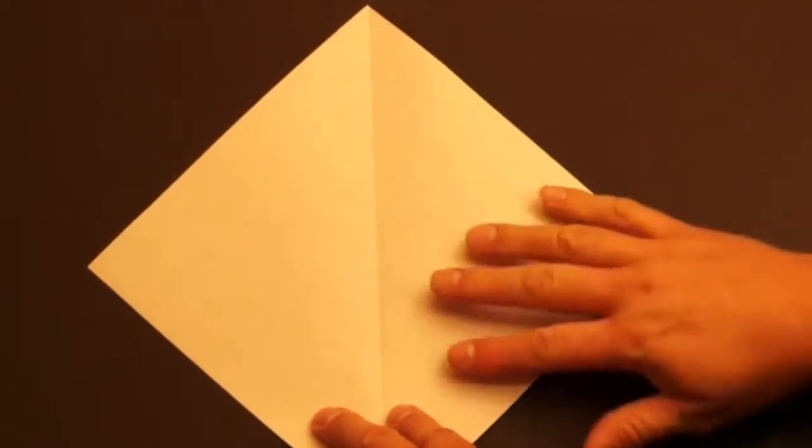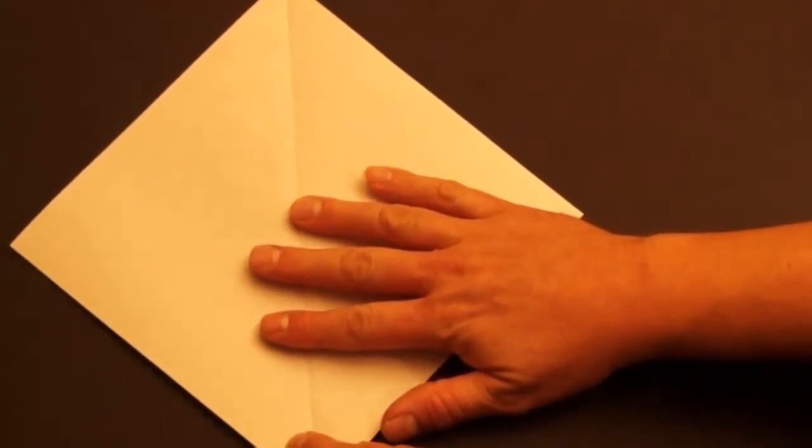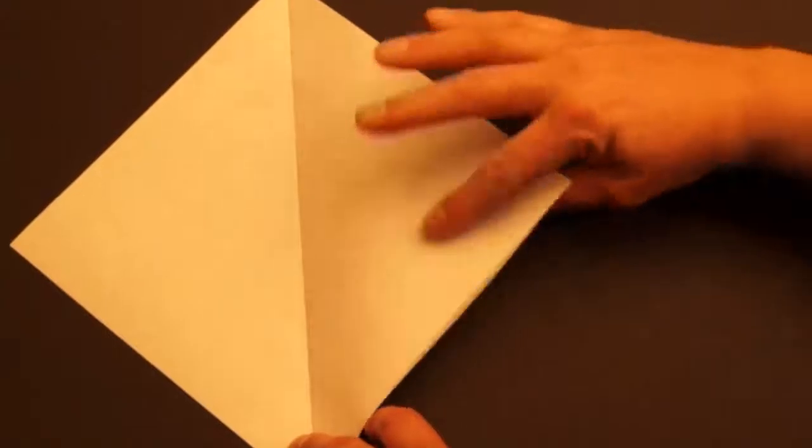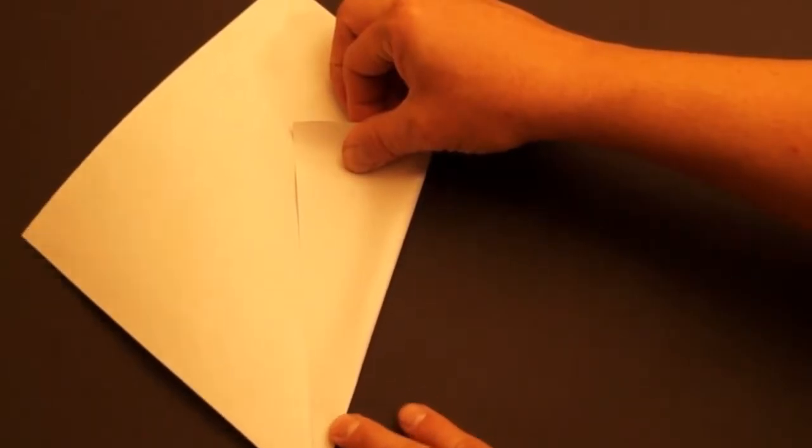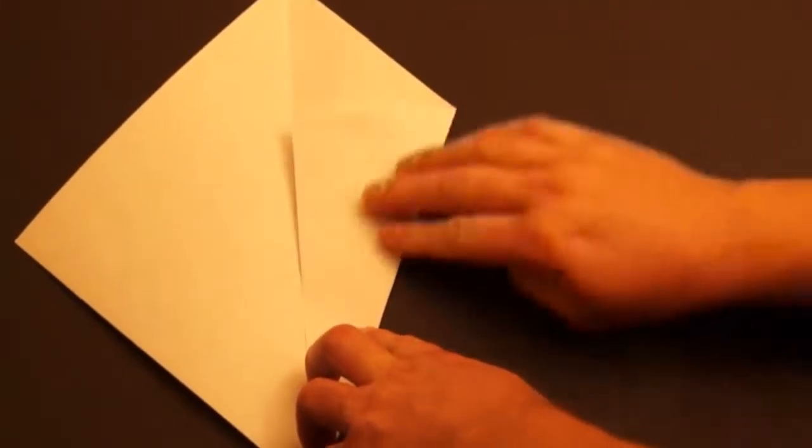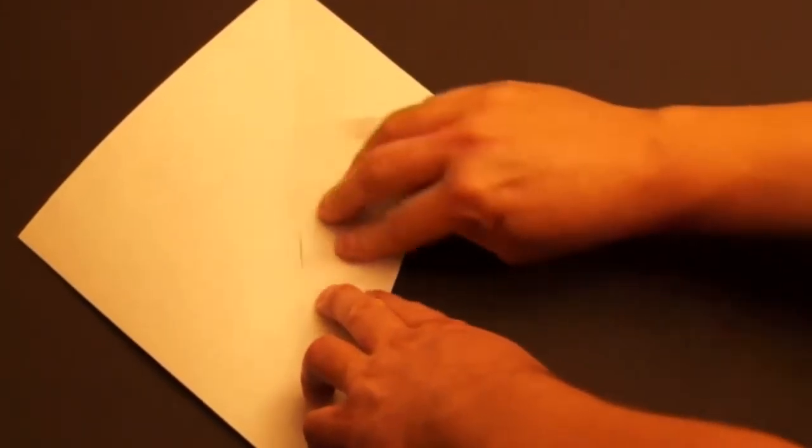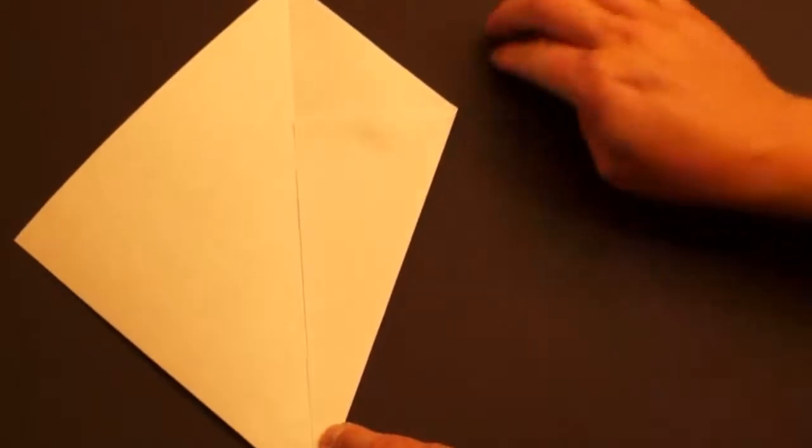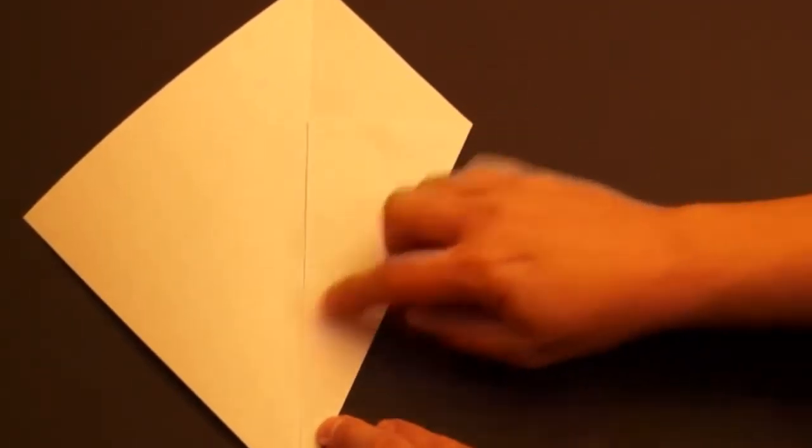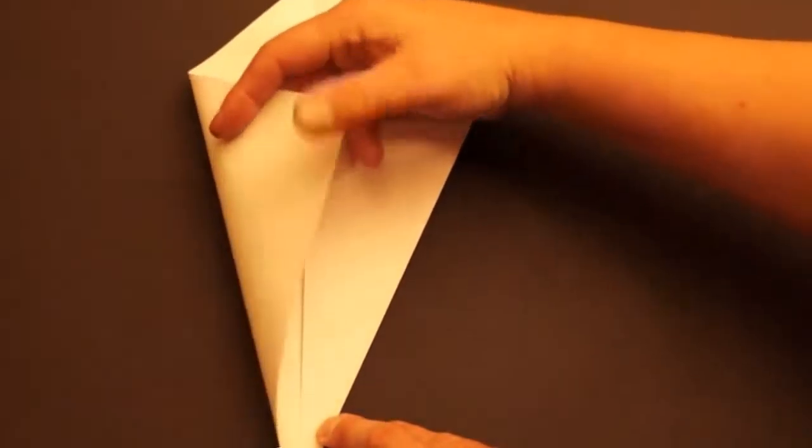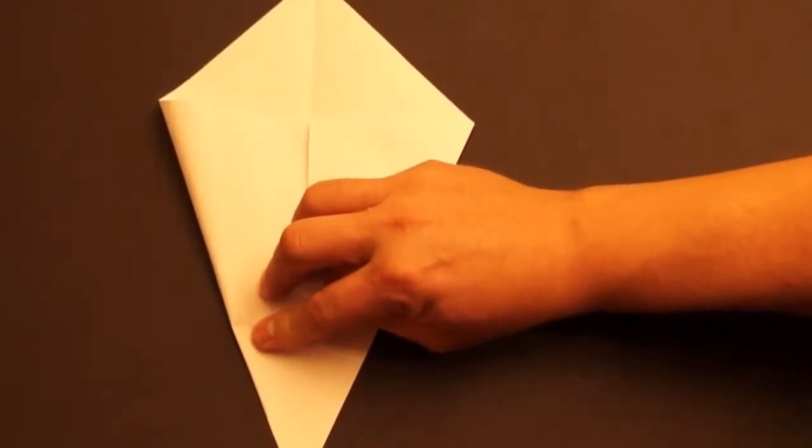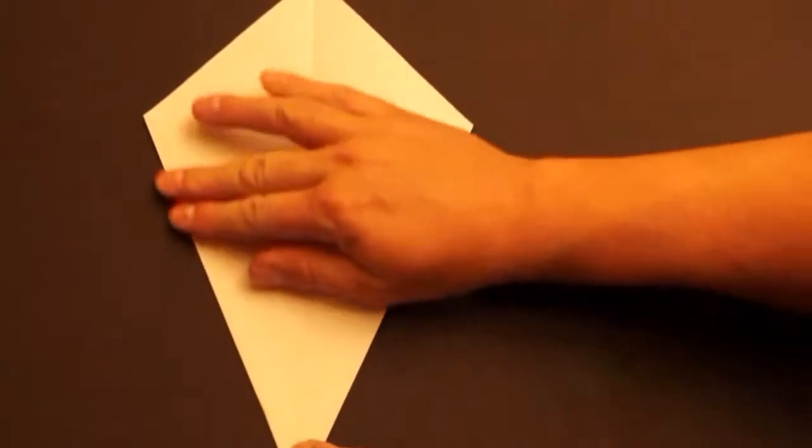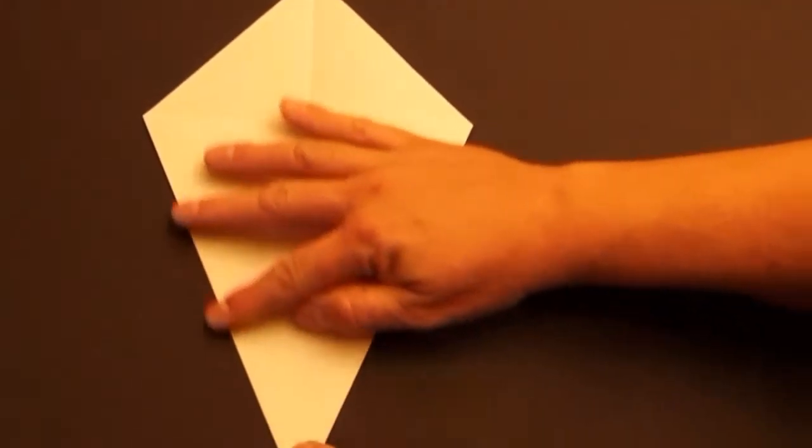Next, we open it up, turn it so the crease is vertical. Take the bottom right edge and fold it down the center. Again, line it up as best as you can. Take the bottom left and fold it over to the center. It should meet the other side in the middle but not overlap. Press down good on your folds.